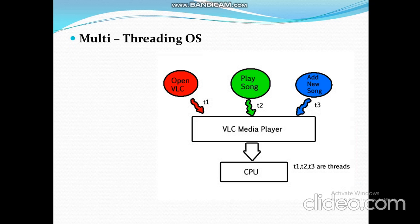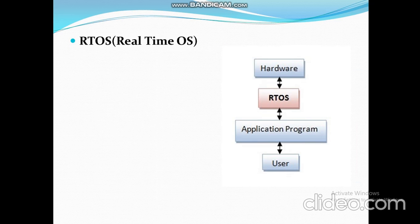Next is the multi-threading operating system. These operating systems allow different parts of a software program to run simultaneously. The feature of multi-threading can delay the execution response of certain processes. For example, if you host a game server on a LAN, your friends utilize different parts of the same game by connecting to your machine at the same time — all resources are utilized from your machine, which can be a performance-degrading factor. Common examples include Windows NT/2000, Windows XP, Windows 7, Windows 8, Unix, and Linux.